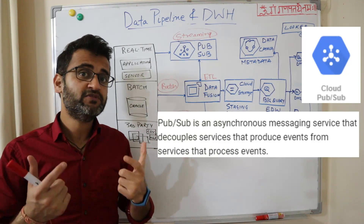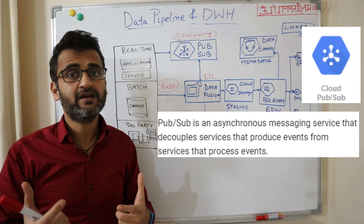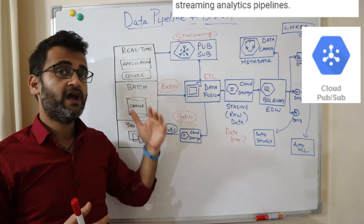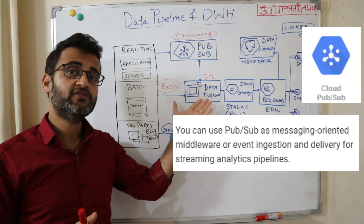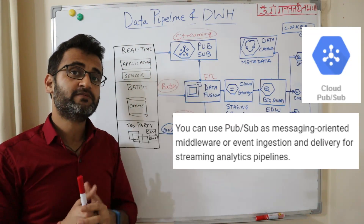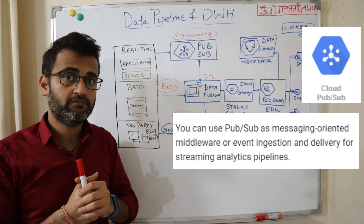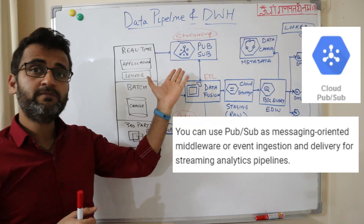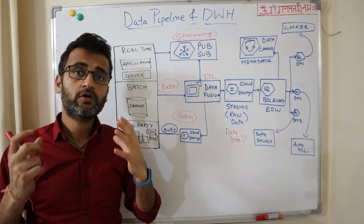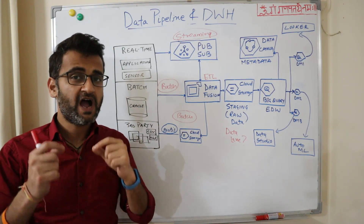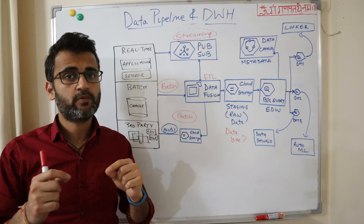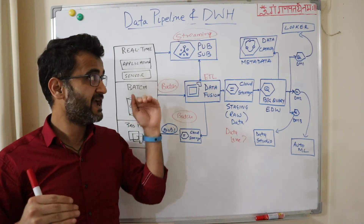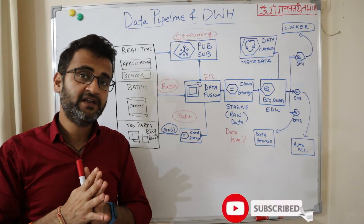To stream real-time data, we will use Google Cloud Pub/Sub, which is an asynchronous message broking service. Similar to what Kafka does, it creates a topic, producers send messages to it, and consumers subscribe to that topic and get those events stored. I will give the link to each of these products in the description below so you can explore every product in detail.